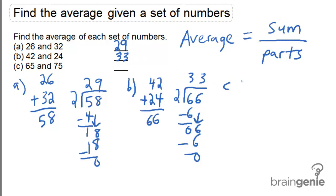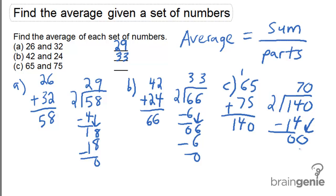In the last example, 65 and 75 have a sum of 140. Again there are two parts, so when we divide 140 by 2, we get an average of 70.